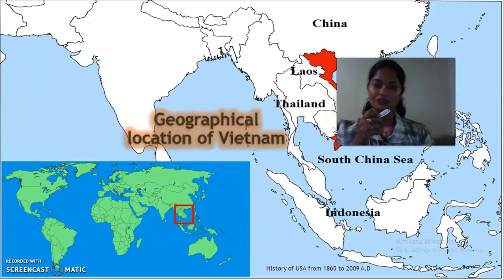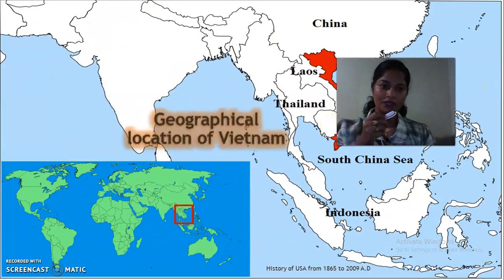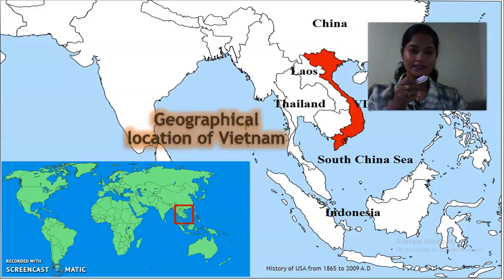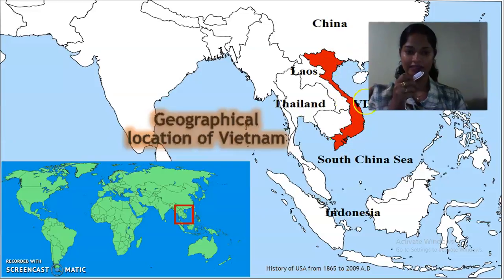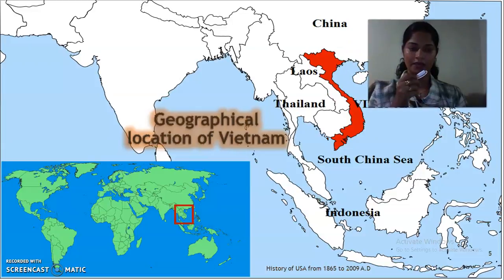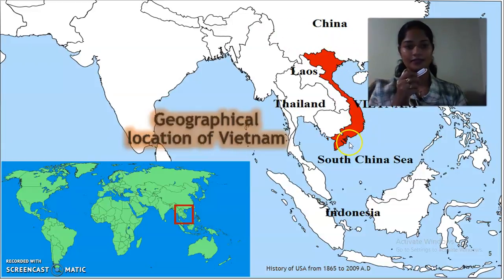This is a geographical location map. As you can see here, the red highlighted portions show the map of Vietnam. It is in the Asian continent.